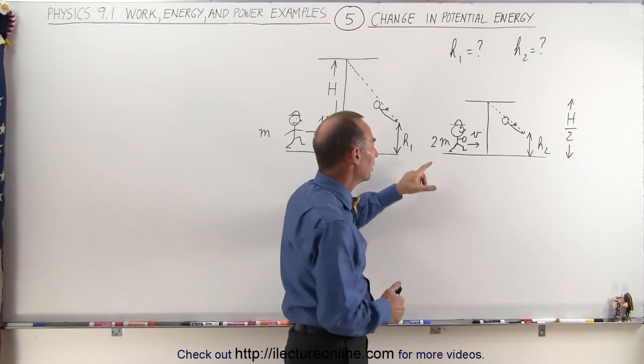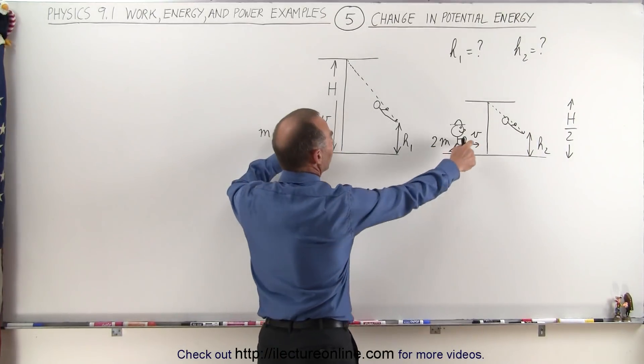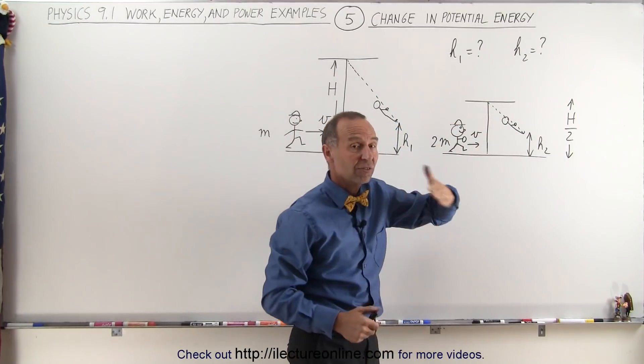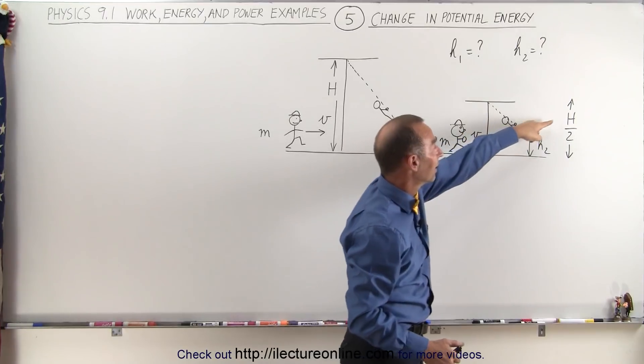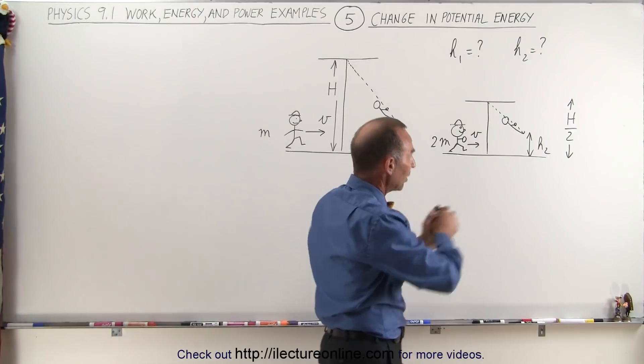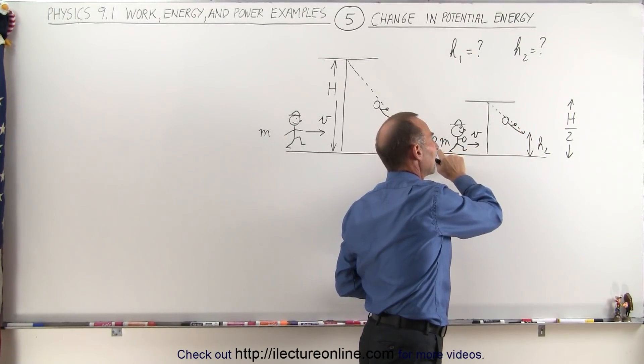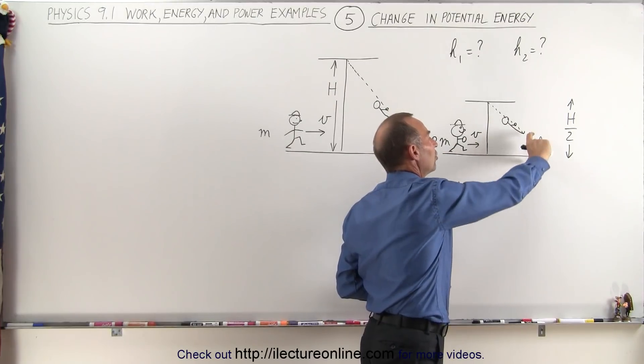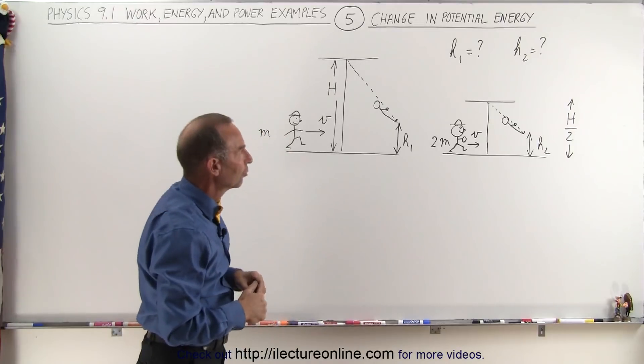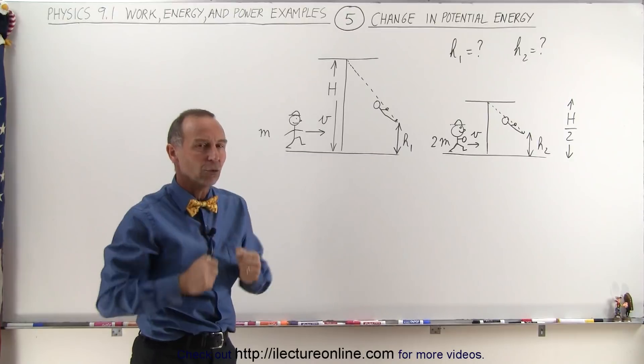Here we have a different runner that has twice the mass but runs to the rope with the same velocity v. But notice that the rope is only half as long because it's suspended from a ceiling that's only half as height, h over 2 versus h. And again the runner grabs the rope, swings up, comes to a momentary stop so that all of this runner's kinetic energy has been converted to potential energy and will have reached the height h2. So the question is what is h1 and what is h2 and how do they compare to one another?